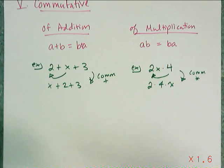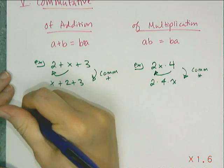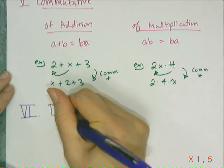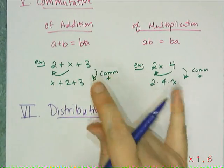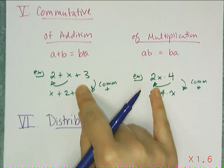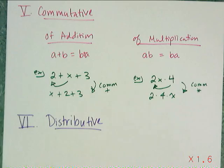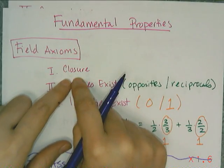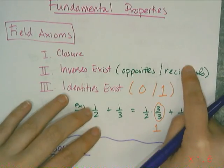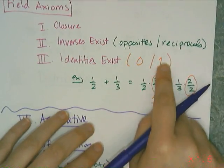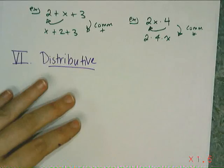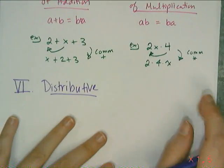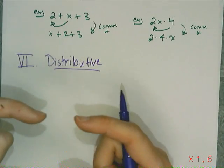The last field axiom is one we spend quite a bit of time on, because if you're not careful with your signs you're going to mess it up. The last field axiom is the distributive property. Unlike the others, there aren't multiple versions of it, because the distributive property combines both operations together. Every other field axiom had separate versions for addition and multiplication — closure, inverse, identity, associative, commutative — but the distributive property combines the two operations into a single property.